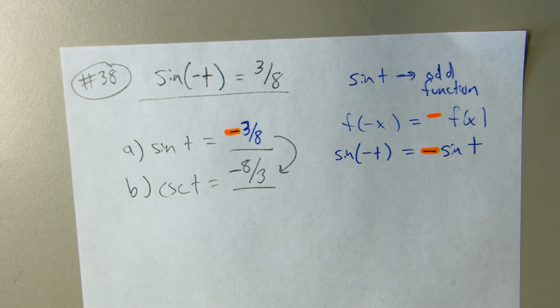So you do need to know what it means to be even and odd. And you need to know that the only two even functions are cosine and secant, the reciprocal, other four are odd. Any questions about that one?